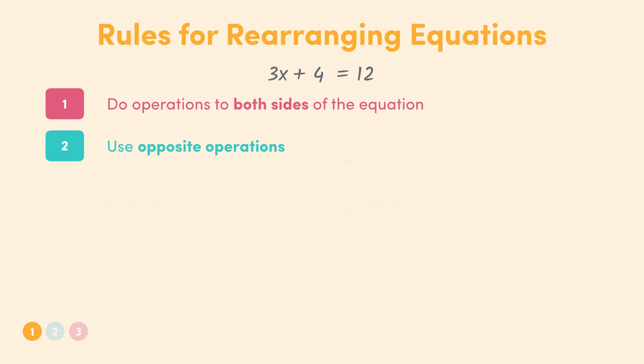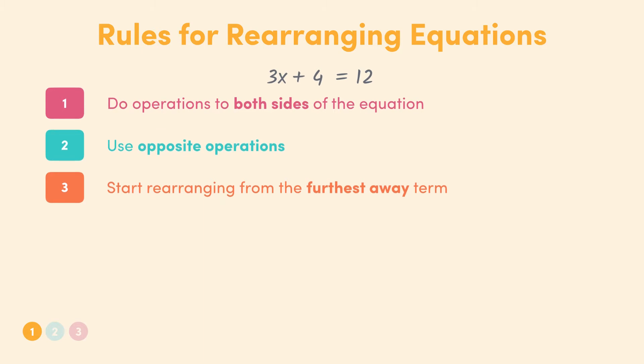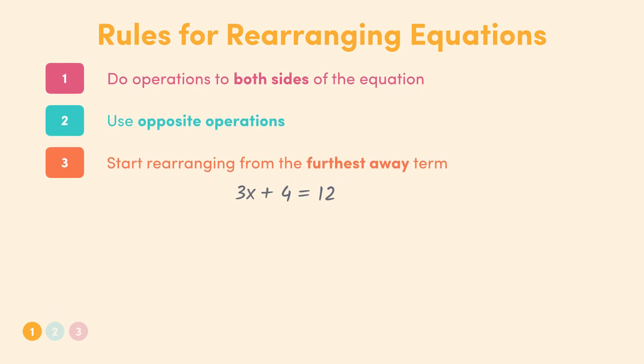The last rule to remember is to always start rearranging equations from the terms that are the most far away from the subject that you're aiming for and work backwards. If we take a look at our example, the term furthest away from the subject x is 12, since it's on the other side of the equal sign. But we can't simplify 12 any further, so other than this, how do we judge what furthest away means? Well, remember our BODMAS order that we looked at in the last video. All we need to do is reverse this order to find out what's the furthest away term from the subject. So next we need to look at any values being added or subtracted.